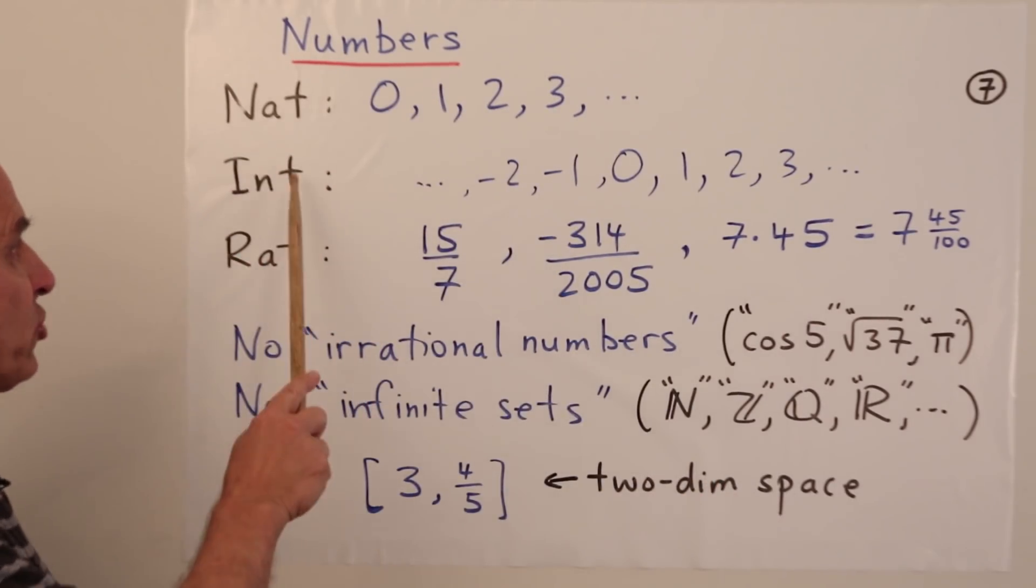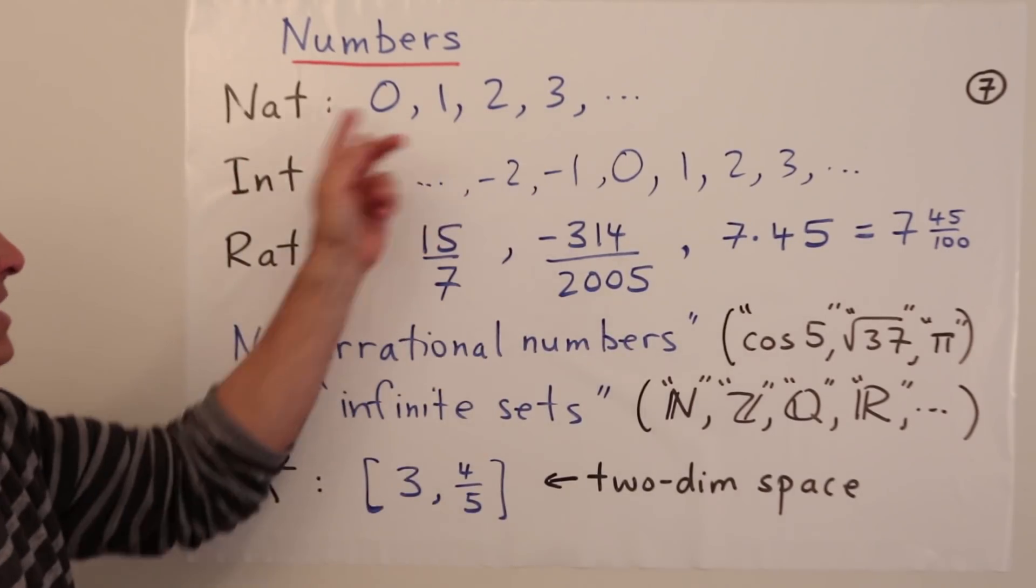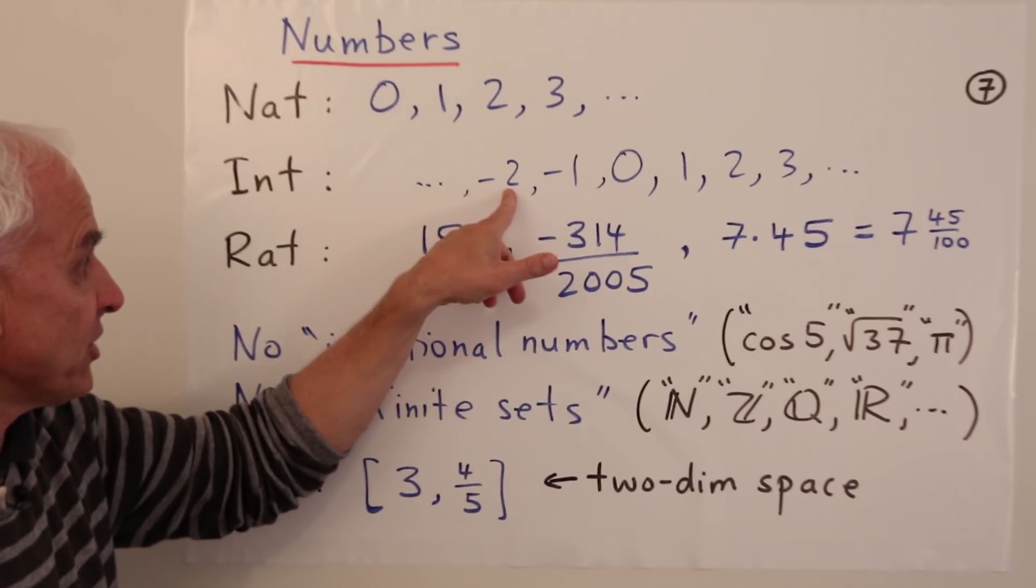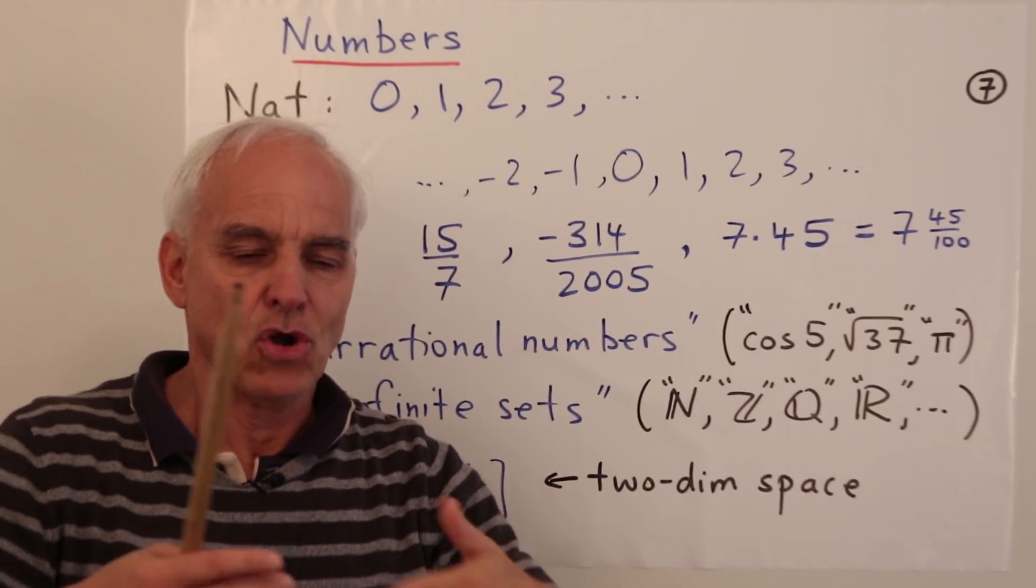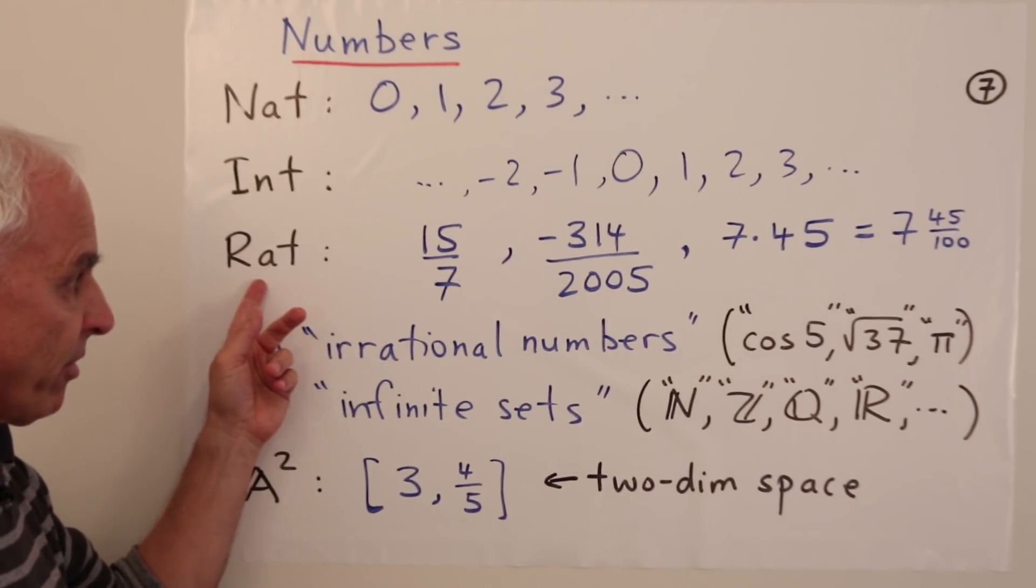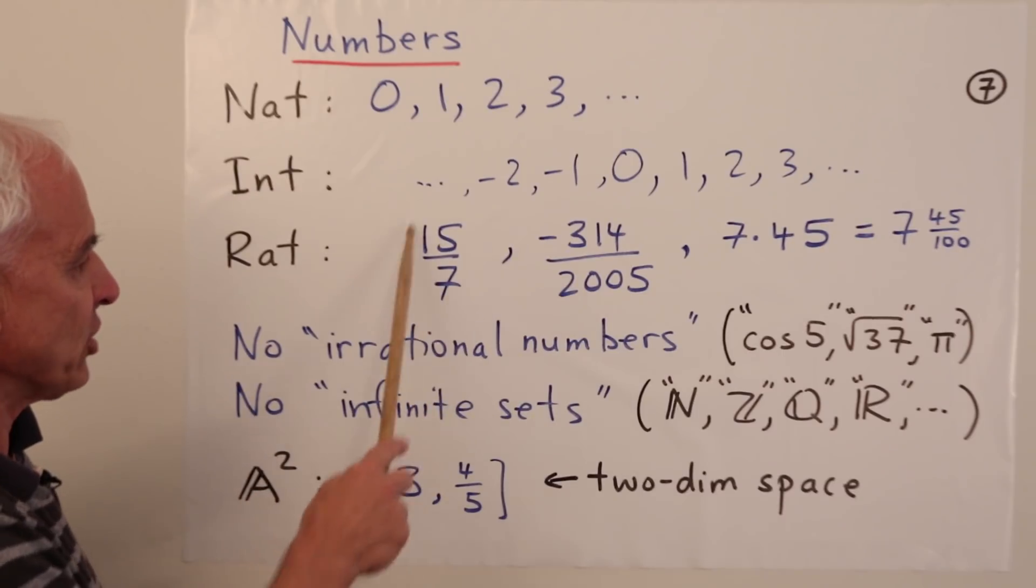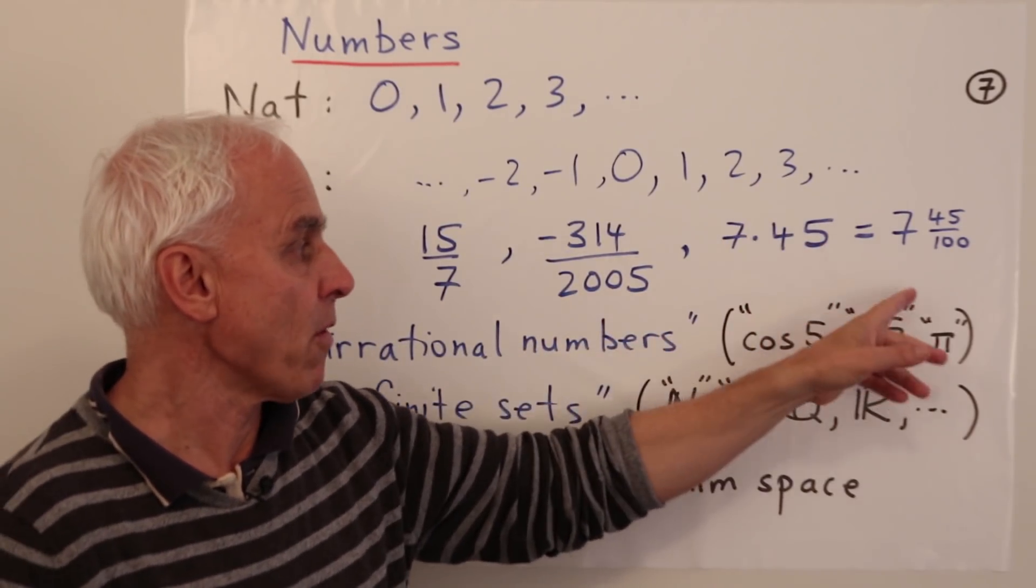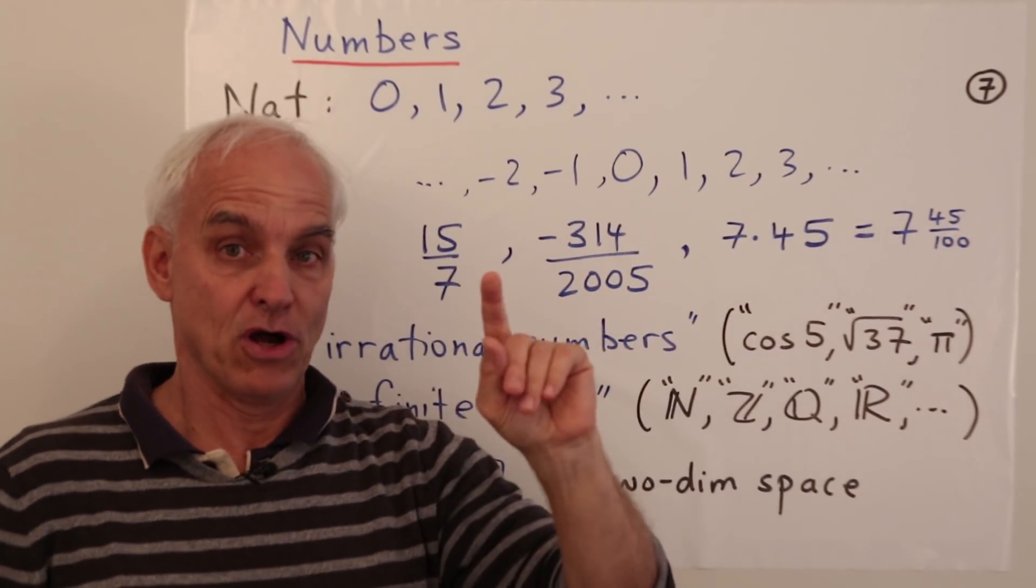Let me tell you our orientation. We're going to assume a working understanding of natural numbers, integers, and rational numbers. There's a number three, we'll say it's a natural number, it's of type nat. Here's minus two, it belongs to the type integer. The natural numbers are sitting inside the integers. Then there are the rational numbers, which extend the natural numbers and integers and include fractions like 15 over 7, minus 314 over 2005, but also decimal numbers 7.45, which is just an alternate form for seven and 45 hundredths. That's our view on decimals, alternate expressions to describe certain types of fractions.